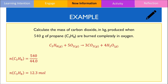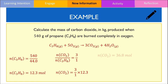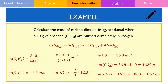Using mole ratios, the number of moles of carbon dioxide should be 3 times that of the number of moles of propane, which gives an answer of 36.8 moles. With this information, I can calculate the mass of carbon dioxide by multiplying the number of moles by its molar mass, giving 1620 grams. Because the question wants the mass of CO2 in kilograms, we divide by 1000, hence the mass of carbon dioxide produced is 1.62 kilograms.